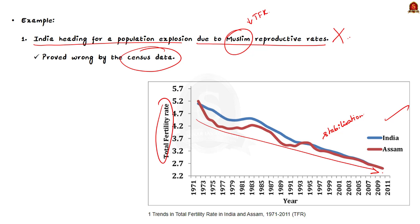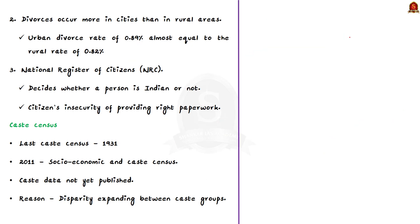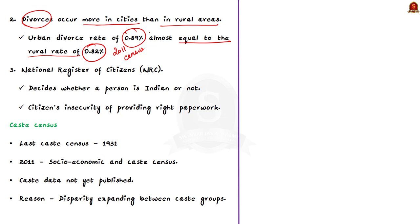Another example to prove the worth of census: there had been a notion that divorces occur more in cities than in rural areas. But the 2011 census proved this wrong — the urban divorce rate is 0.89%, which is almost equal to the rural rate of 0.82%. This shows the importance of census data.